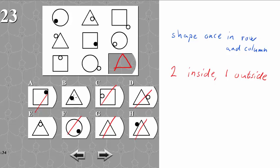Then we have to choose between these two. And then the third rule must be that the black little circle is represented once in each row and in each column. So it's going to be B.